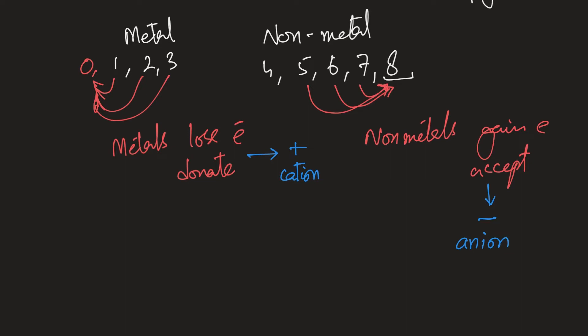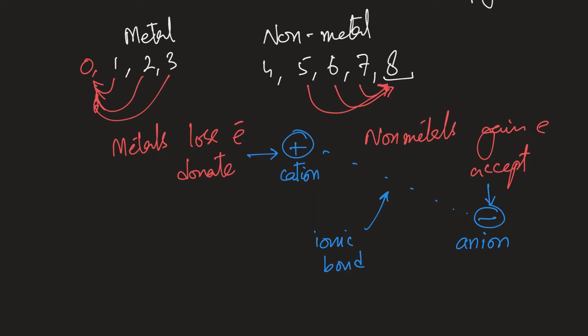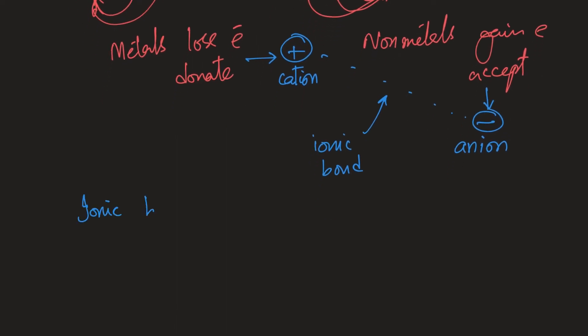And as you know, there's going to be a very strong attraction between positive and negative. There's a strong attraction, and this attraction is called ionic bond—because it's the bond, the strong force of attraction between ions. So if I were to define it, ionic bond is force of attraction between positive ions and negative ions. We can also say between cations and anions.